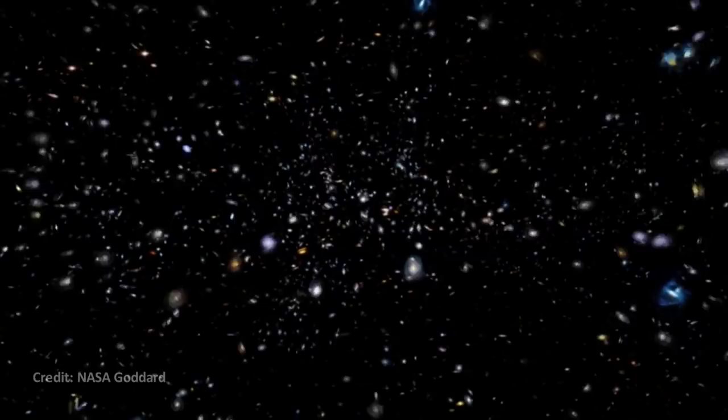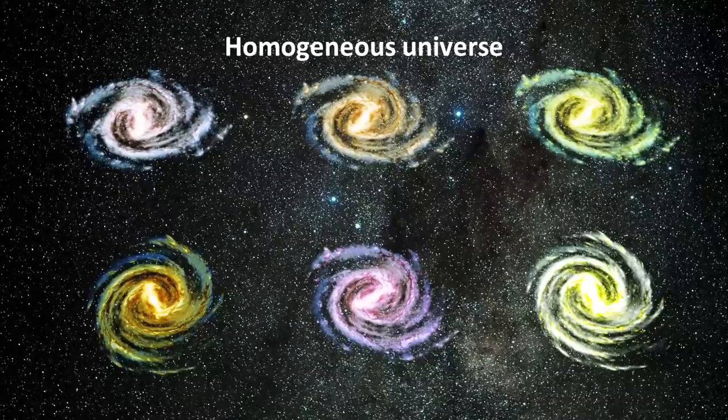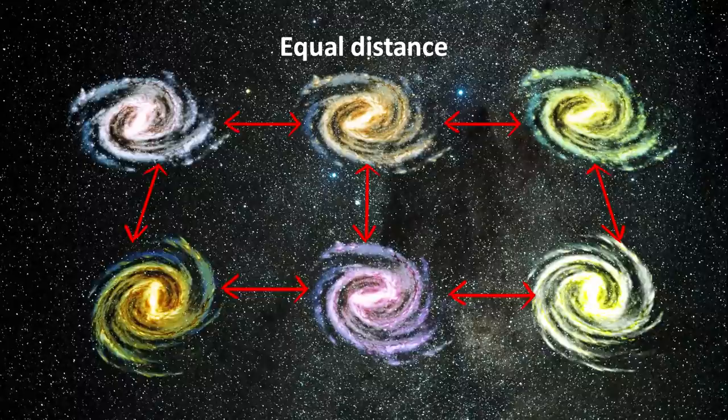This means that the early universe was essentially the same in all locations and in all directions when the CMB was formed. This fact not only gives us a clue about what the early universe looked like shortly after its creation, but has profound implications for the way it looks today. The isotropy and homogeneity has manifested in a universe we see today where the average density of galaxies is the same throughout the universe, and does not change much with distance or direction.